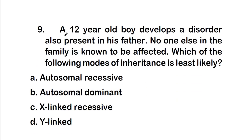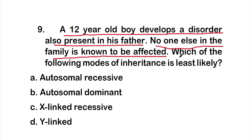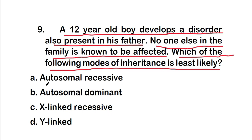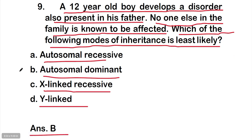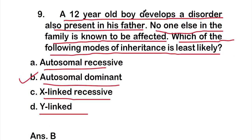Question nine: a 12-year-old boy develops a disorder also present in his father; no one else in the family is known to be affected. Which mode of inheritance is least likely? Options: A: autosomal recessive, B: autosomal dominant, C: X-linked recessive, D: Y-linked. The right answer is option B, autosomal dominant is least likely.